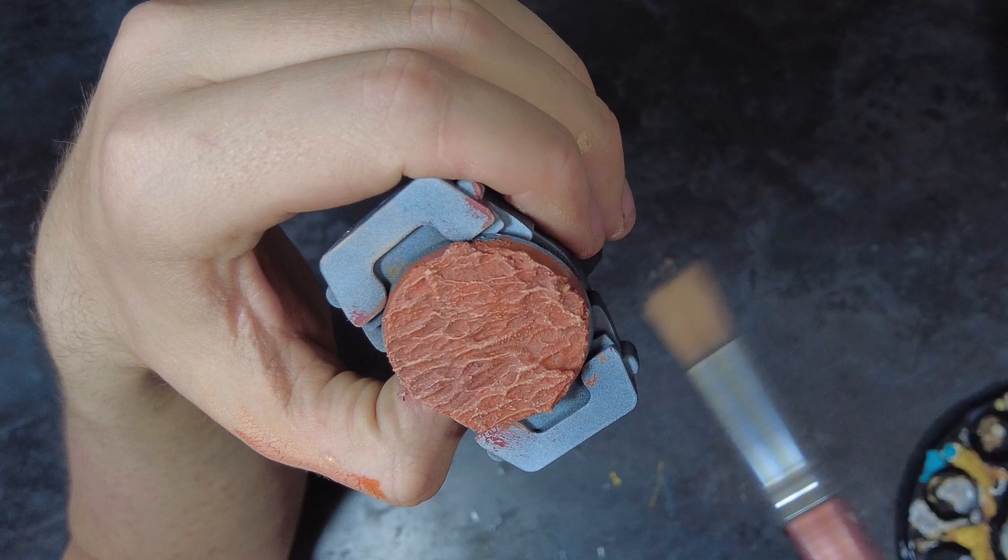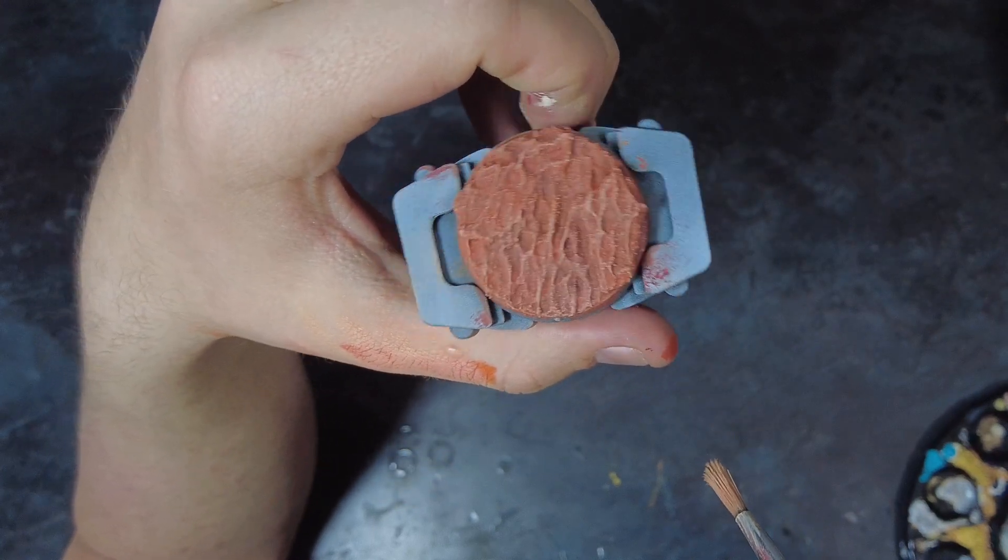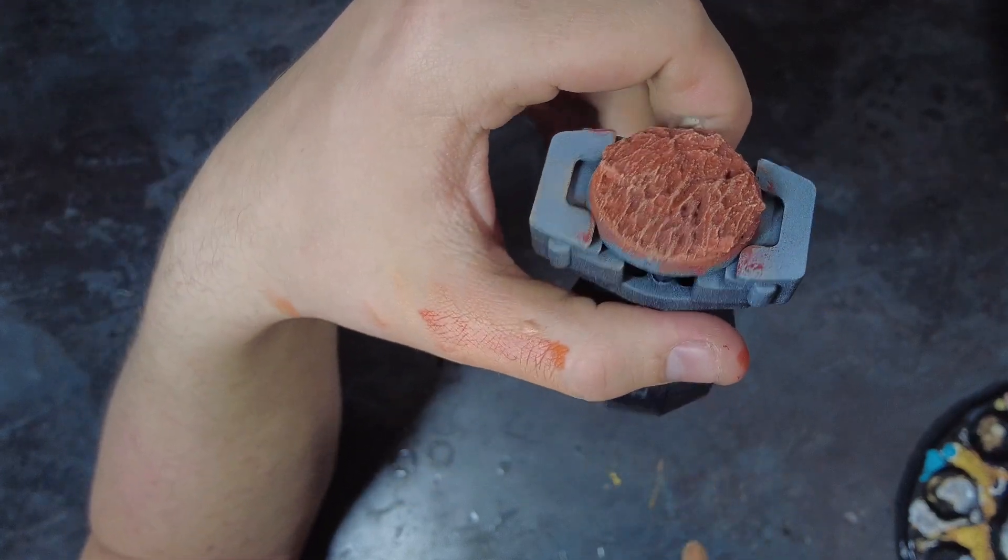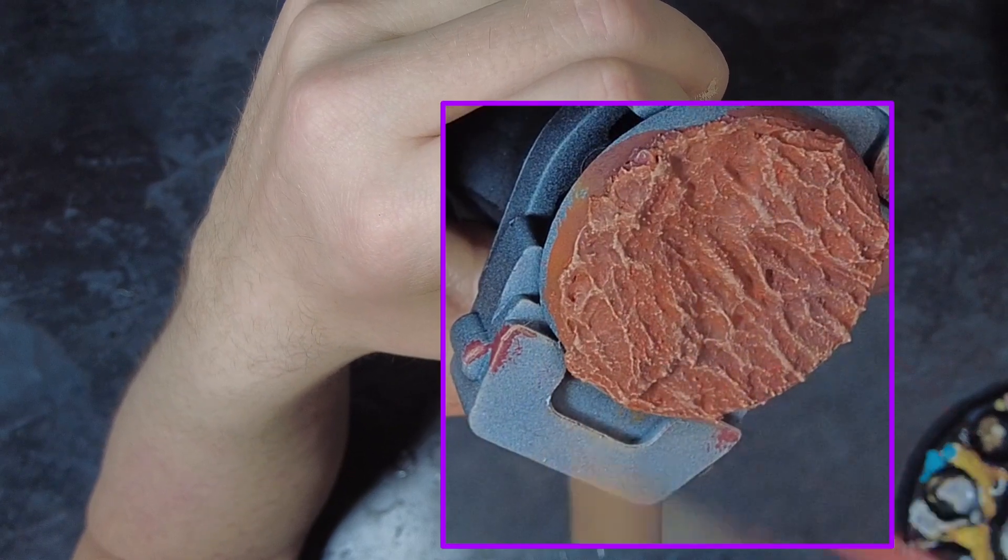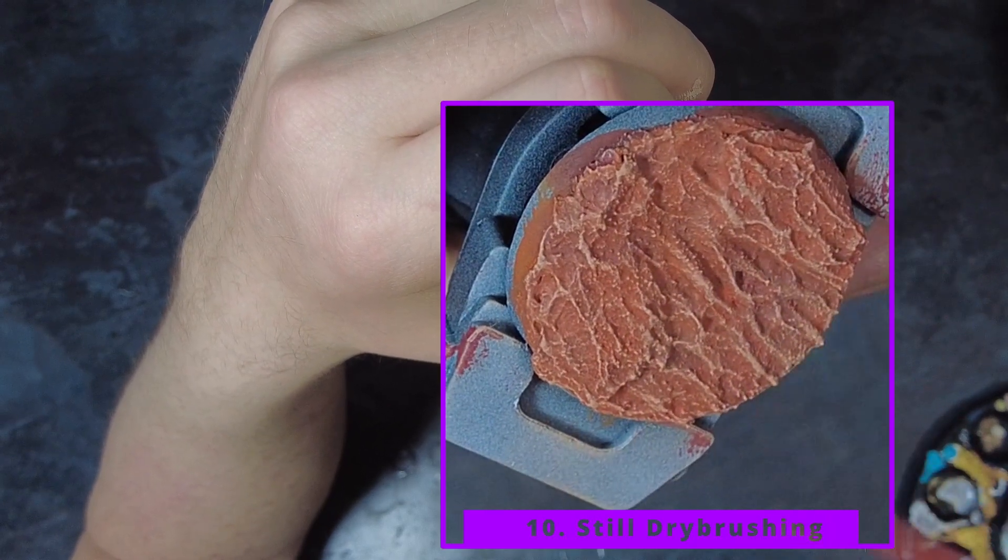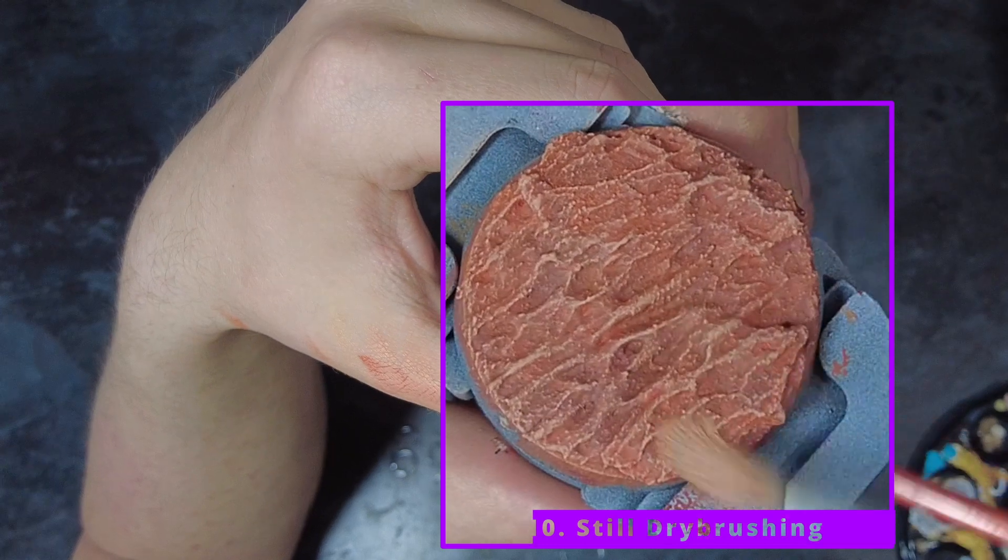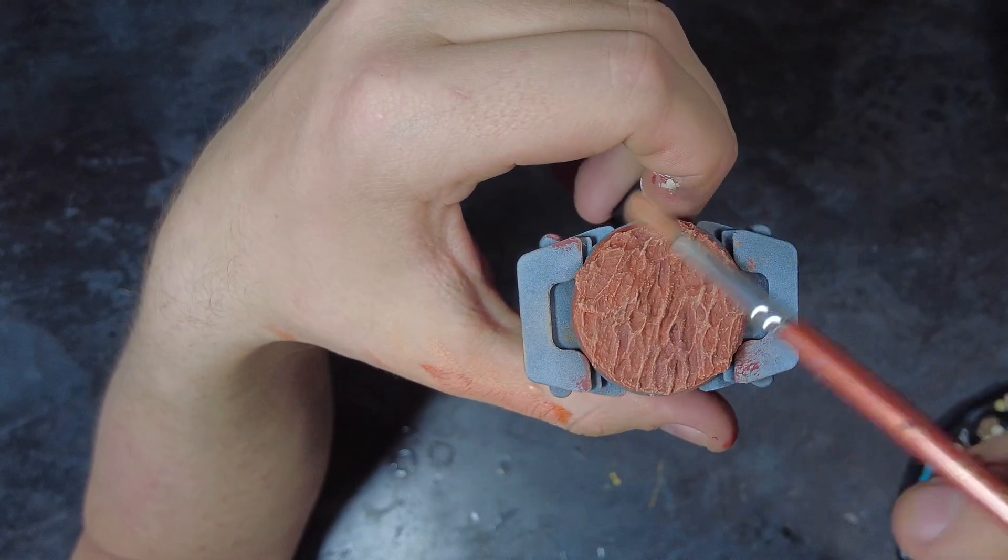So, we want to take this desaturated orange mix and dry brush it all across the base, catching all the highest areas and preserving our past work. So, this is where we'll be catching the top of the rocks and the top of the erosion ridges that we've made in our base so far.